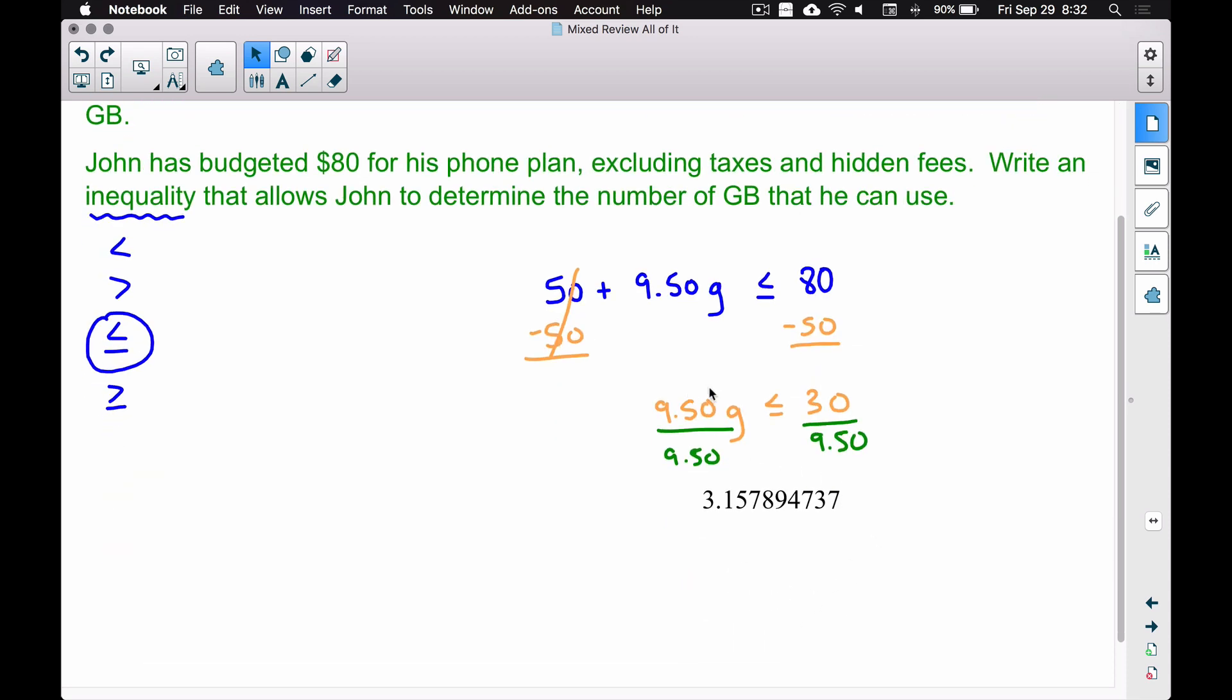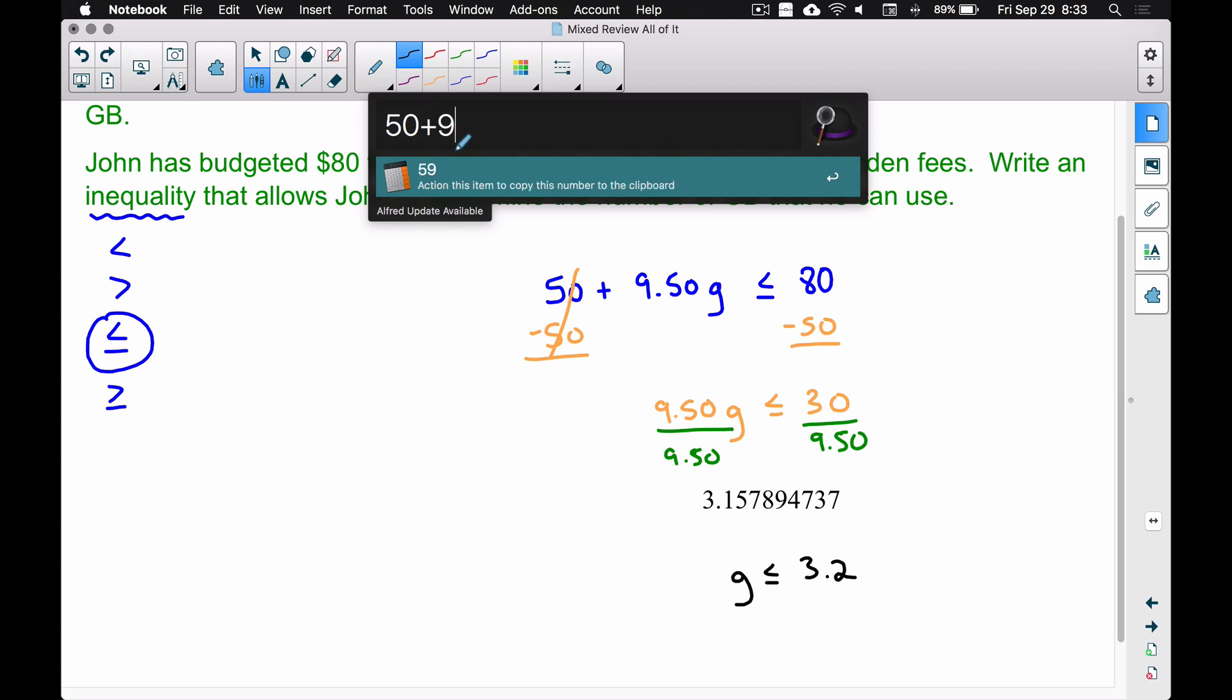Can John use 3 gigabytes? Absolutely. But when we round here, g is less than or equal to, if we round this to the nearest tenth, 3.2. Technically that's not right, because if he used 3.2, that is a little bit bigger than this number right here. Let's look at that in a slightly different context. $50 plus $9.50 times, let's suppose he did use 3.2 gigabytes. Notice his monthly charge is going to be $80.40. I know it says 80.4, but just imagine the extra zero. Technically he's gone past his budget a little bit. Really, where does he want to stay? He wants to stay somewhere around 3.1 gigabytes.